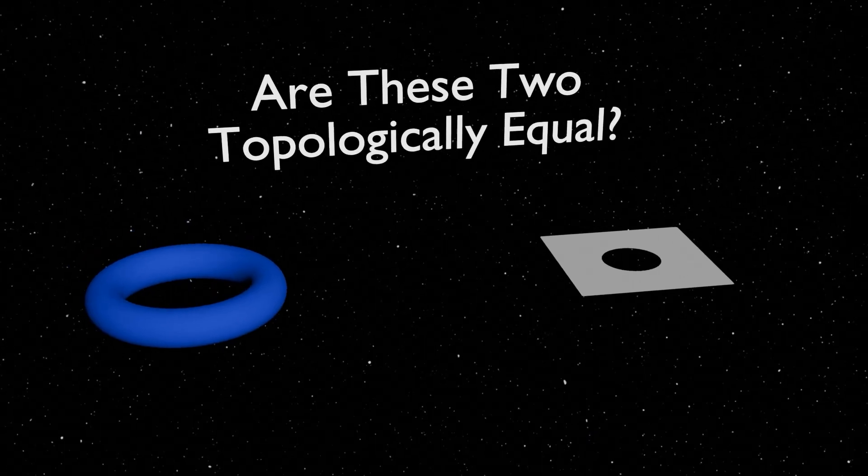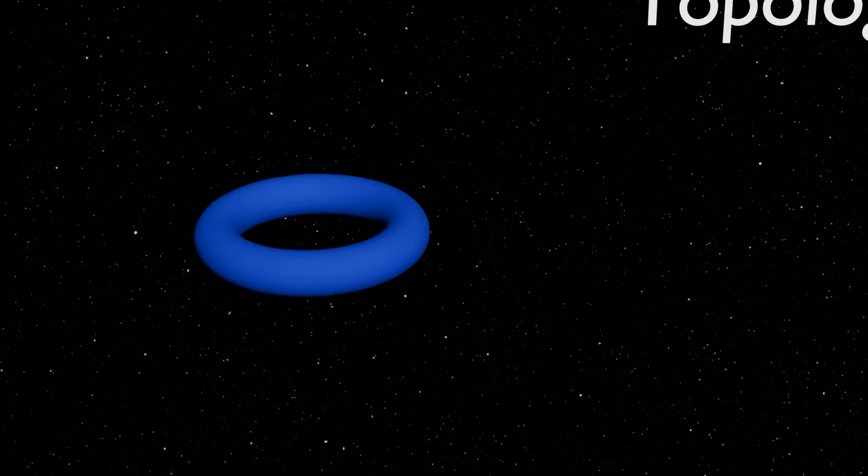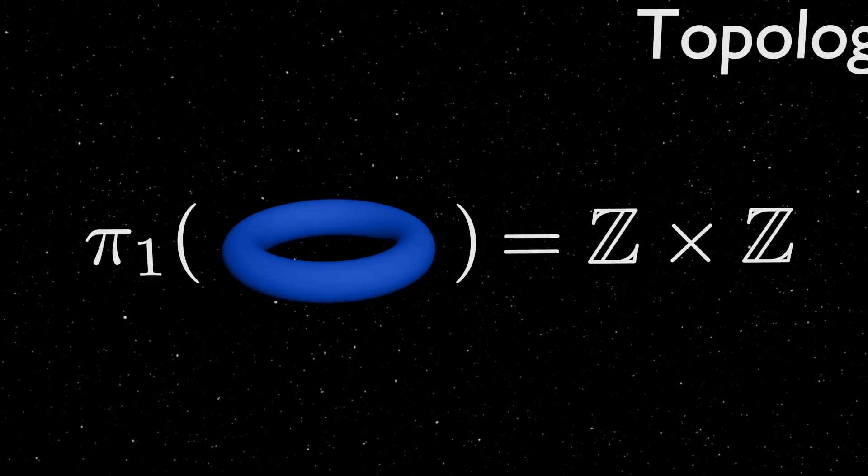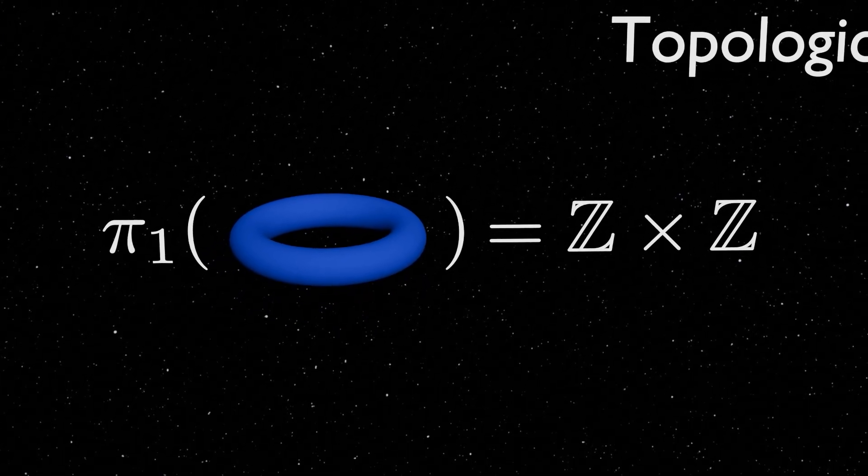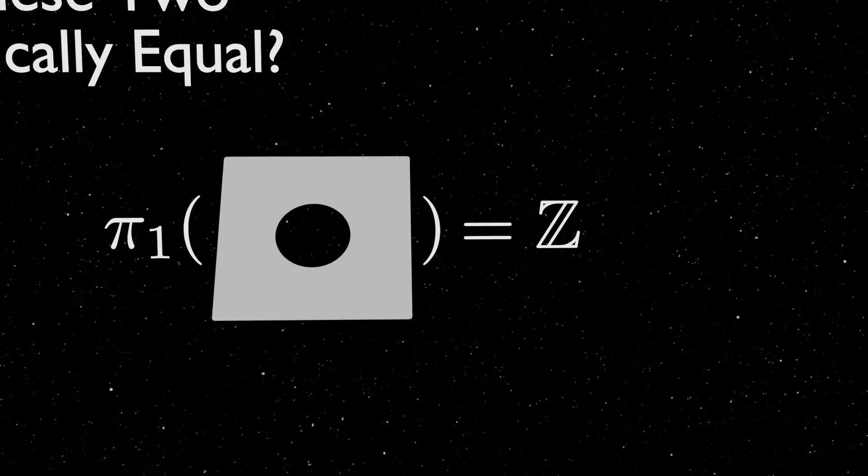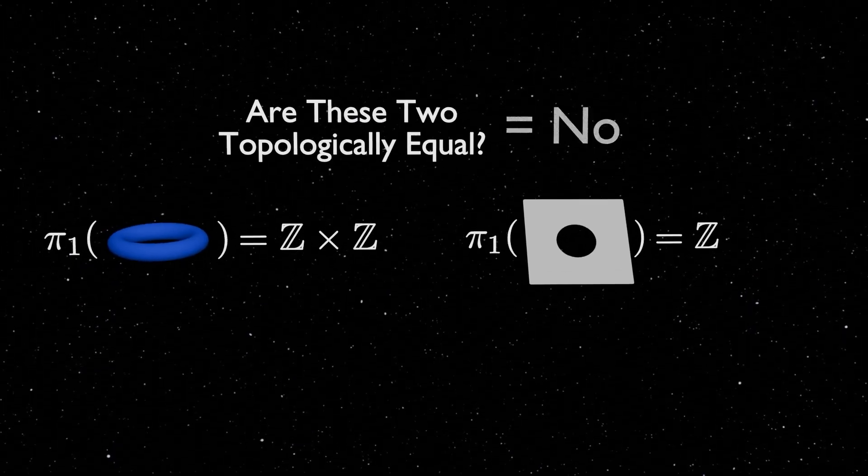In our analogy, we differentiated between the donut and the punctured plane by seeing that they have different fundamental groups. The fundamental group of the donut was the pairs of the integers, while the fundamental group of the punctured plane was just the integers. Because these groups are different, that means that two spaces can't be continuously deformed into each other.